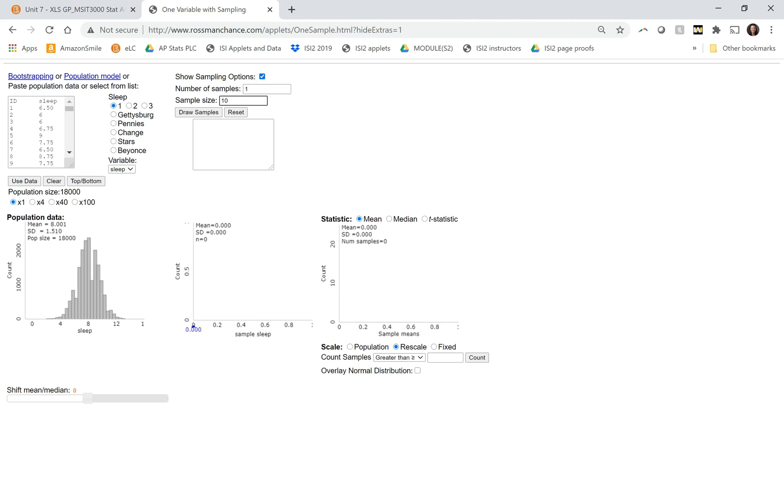So I'm going to do a sample size of 30 and draw samples. So you can see the blue dots here on the population are showing which people from the population got sampled. And then this most recent sample is showing for all of those 30 people what their sleep times were. And then 7.942, that's the average sleep time for that particular sample. And that sample average is getting put over here in the third plot.